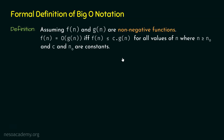In our previous graph, we saw that G(n) is asymptotically bigger than F(n) after some point. In this definition, we multiply G(n) by some constant C because it might be possible that G(n) alone is not greater than or equal to F(n). After multiplying by constant C, it may become greater than or equal to F(n) for all values of N ≥ N₀.